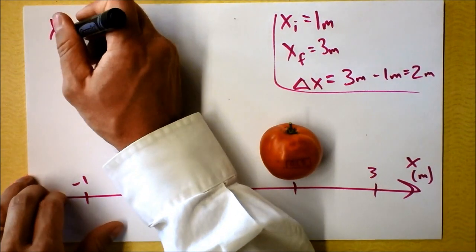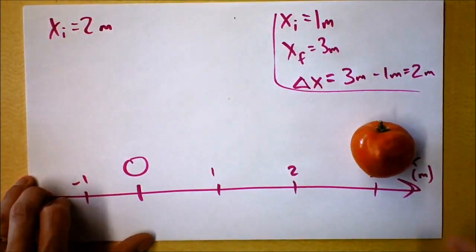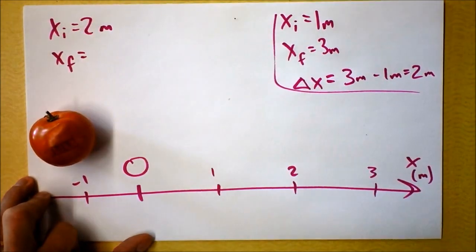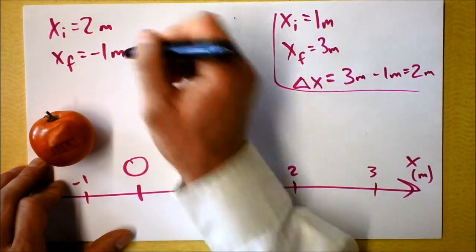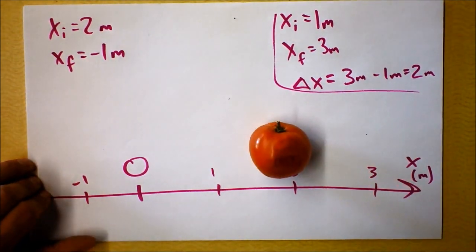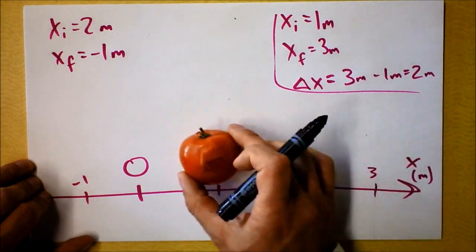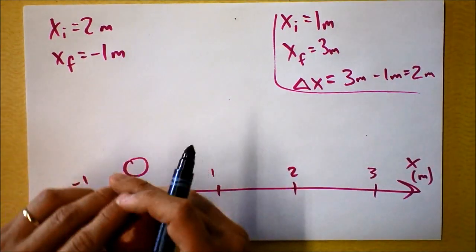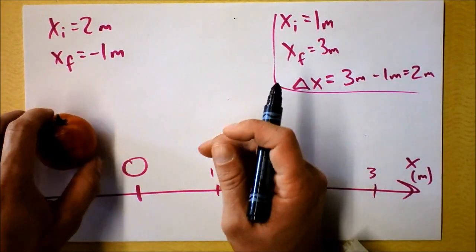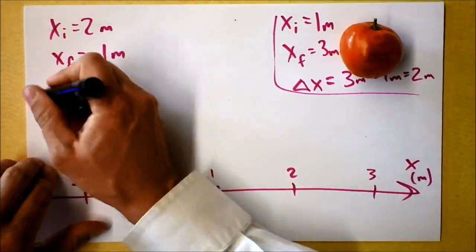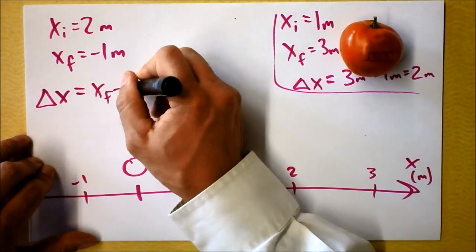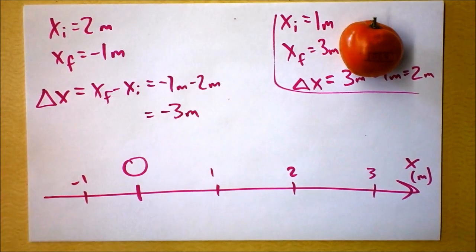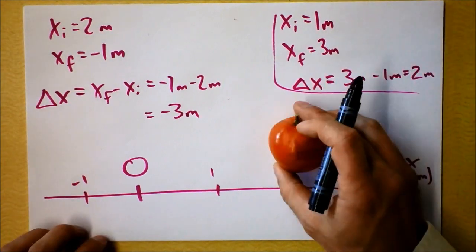What if instead I start at a position of two — xi equals two meters — and I go to three meters, and then I go to negative one meter? I'm starting at two, going to three, and ending up at negative one. Xf is negative one meters. Now let's do the odometer thing. The total distance traveled is one meter so far, and then another four — five meters total is the distance traveled. But the displacement is much smaller. The displacement is x final minus x initial, which is negative one meters minus two meters — that's negative three meters. So it must have moved the negative direction.